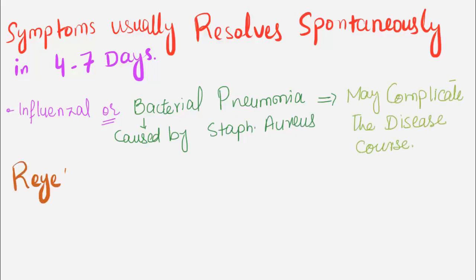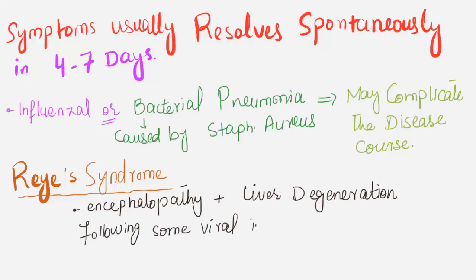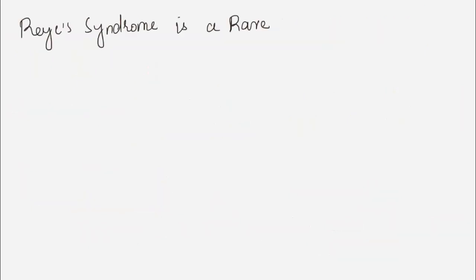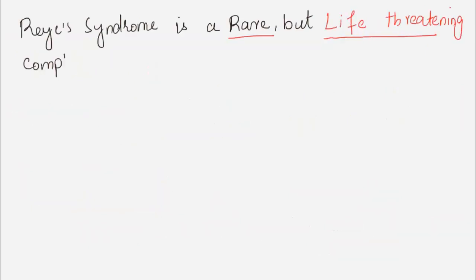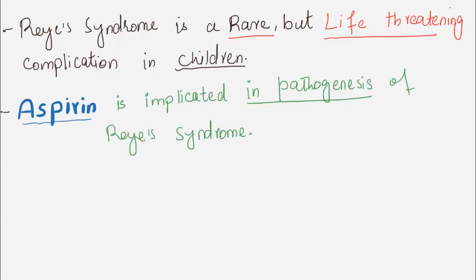Reye Syndrome is characterized by encephalopathy and liver degeneration following some viral infections, like Influenza B virus infection or chickenpox infection. It is a rare but life-threatening complication in children. Aspirin is implicated in the pathogenesis of Reye syndrome.